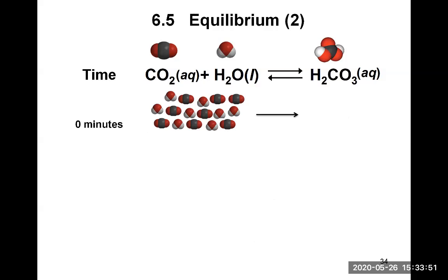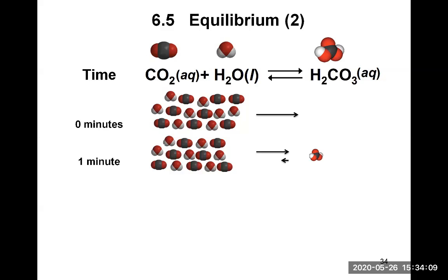At time zero, you have only the two reactants, CO₂ and H₂O. Because you have reactants, they will begin to react together. After one minute, you may have produced one molecule of H₂CO₃, which means you've lost a molecule of CO₂ and water — there is less reactant on the left side. Because you have started to make a product, the reverse reaction begins to take place as well as the forward reaction.